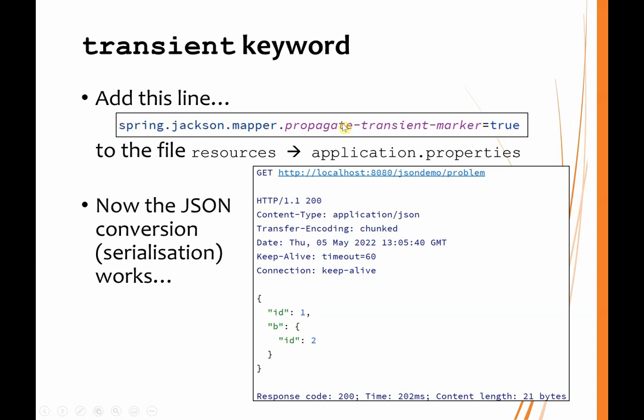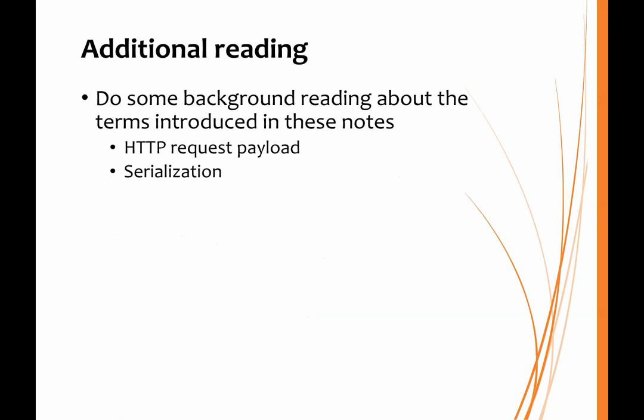As soon as you do that, the serialization works perfectly. So we've looked at JSON — it's actually quite straightforward, and also very flexible. That makes it ideal for communication between our clients and the RESTful API.